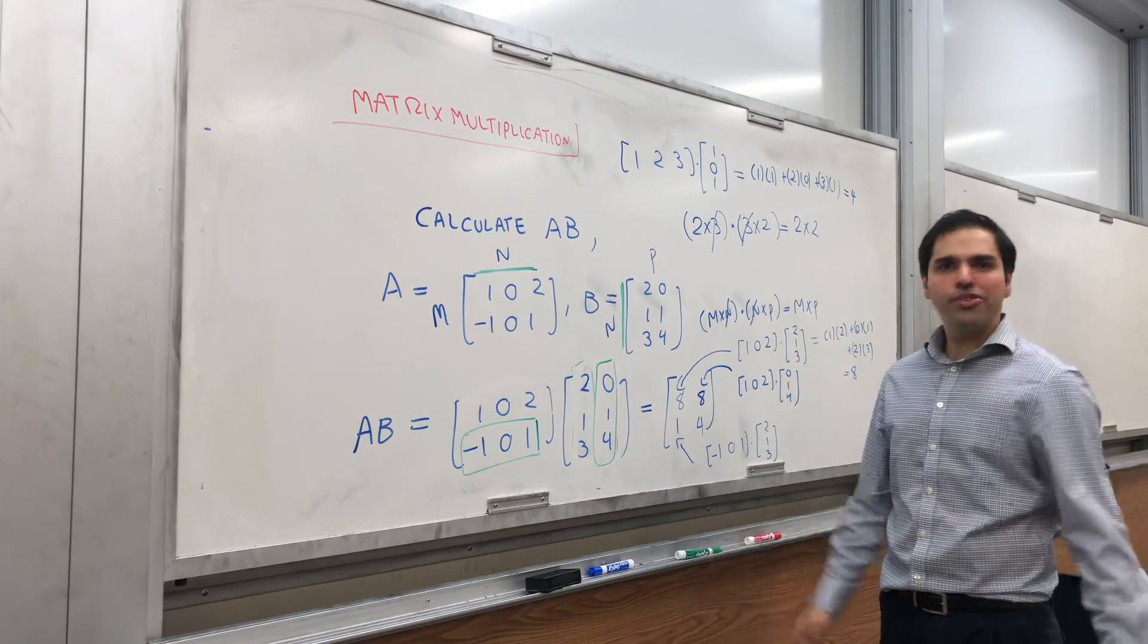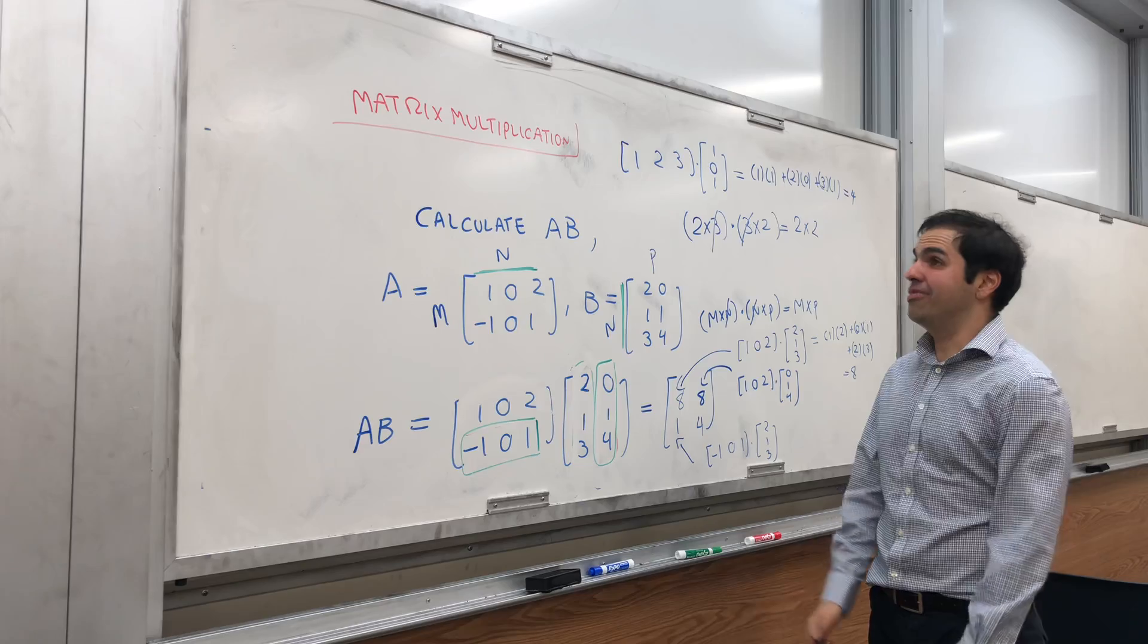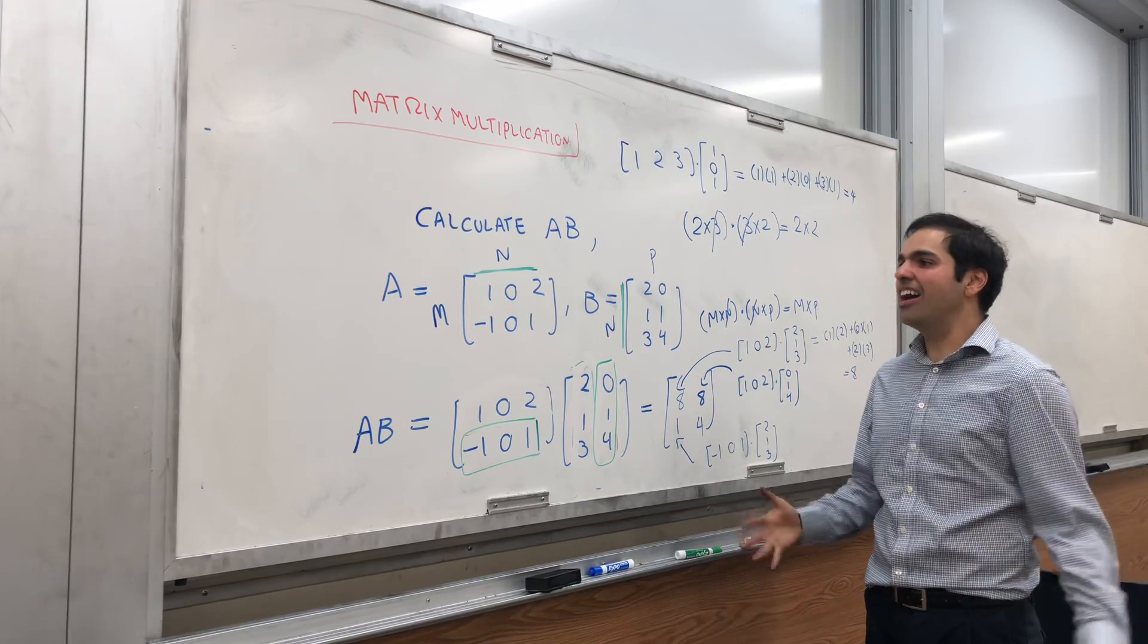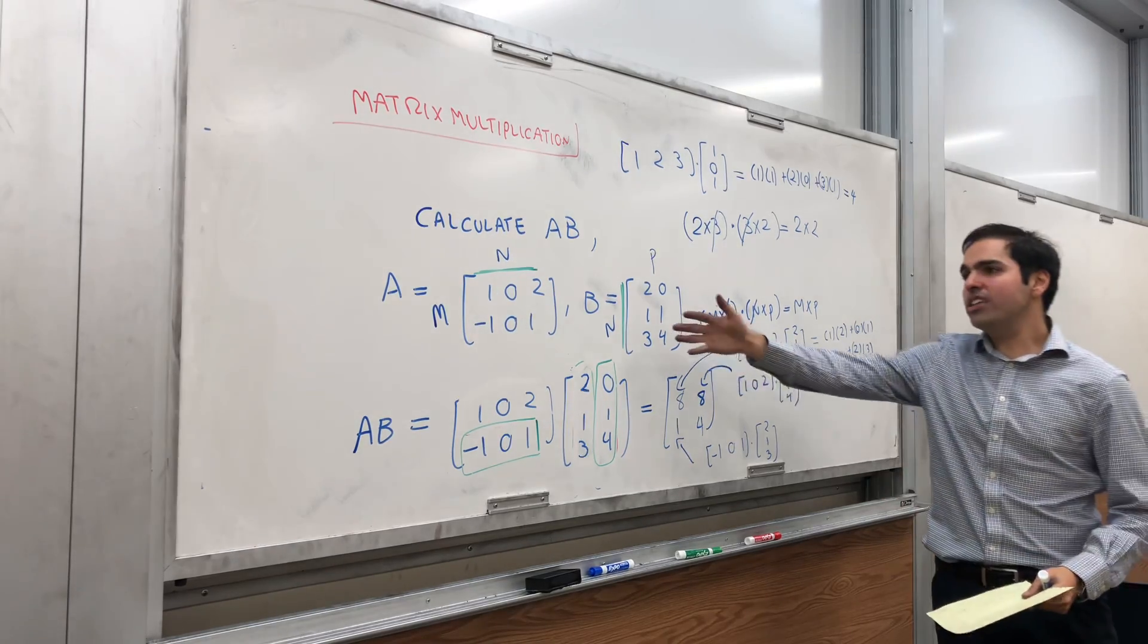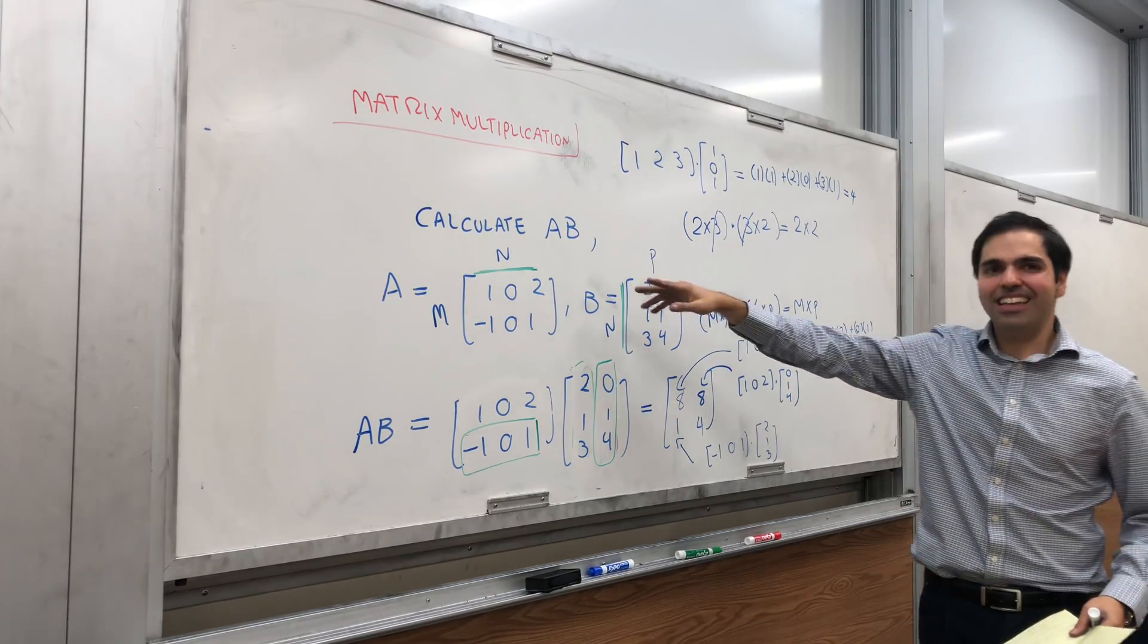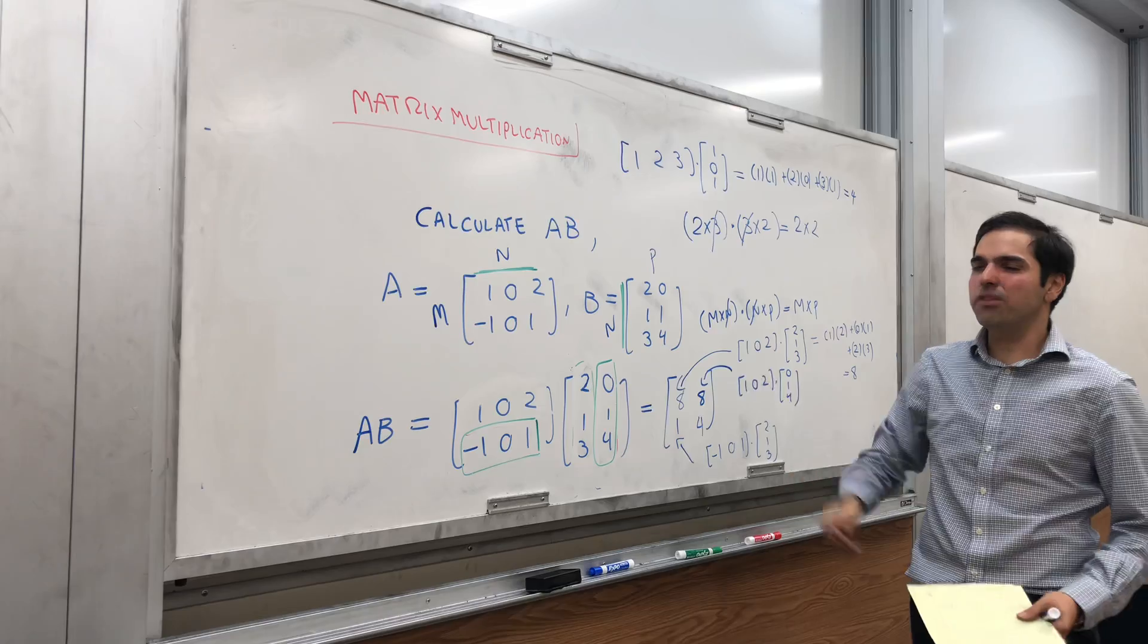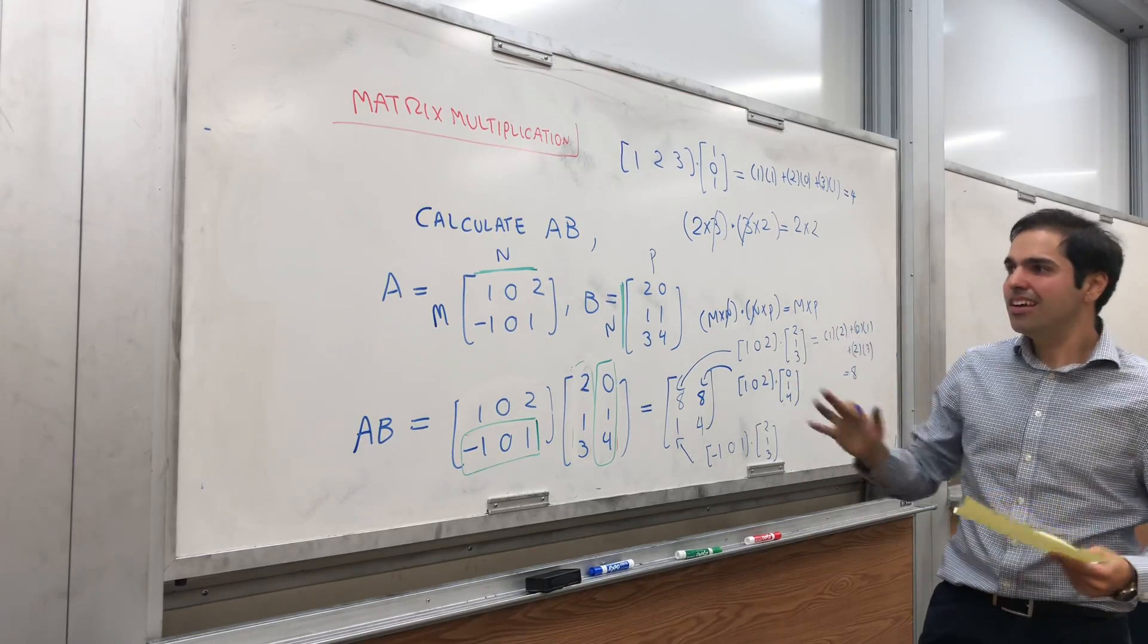And in future videos I'll do more examples and we'll see for example that AB is not BA. One remark though before I end. Remember I told you you need to check that the number of columns of A equals the number of rows.